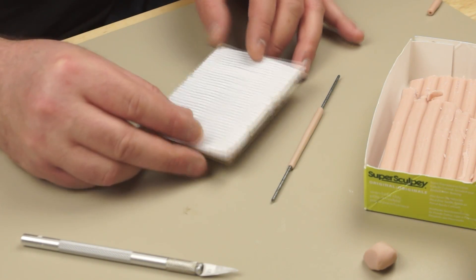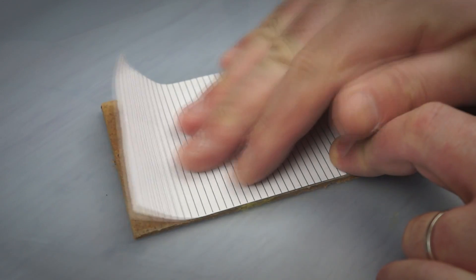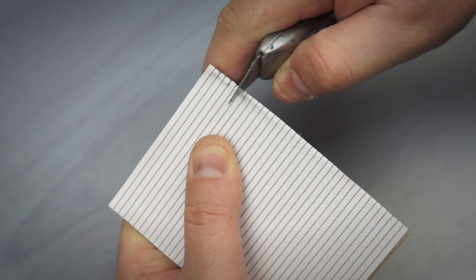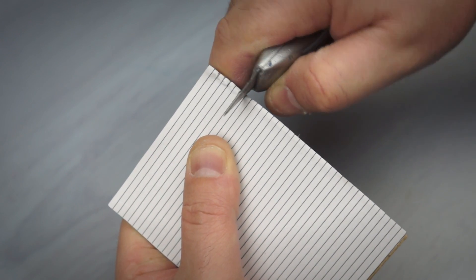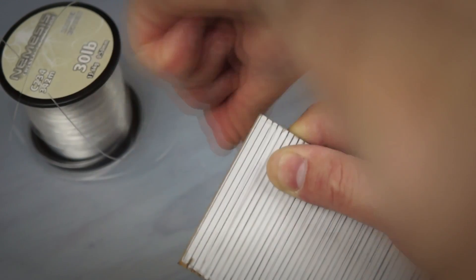To add the ribs to the worm I'm going to use a texturing tool. This has been made from a piece of hardboard that I've stuck some fine line writing paper onto and then with a Stanley knife just cut notches along the edge of the lines on both sides. And finally using the notches I've wrapped the board with some 30 pound monofilament fishing line.